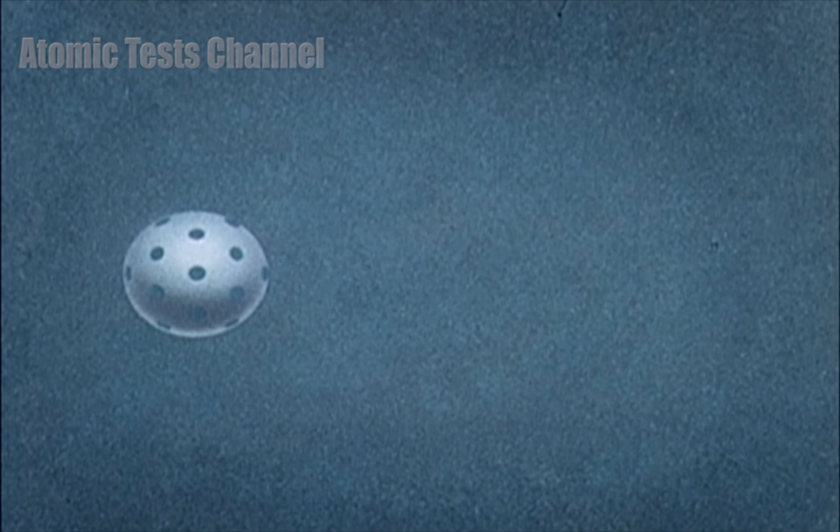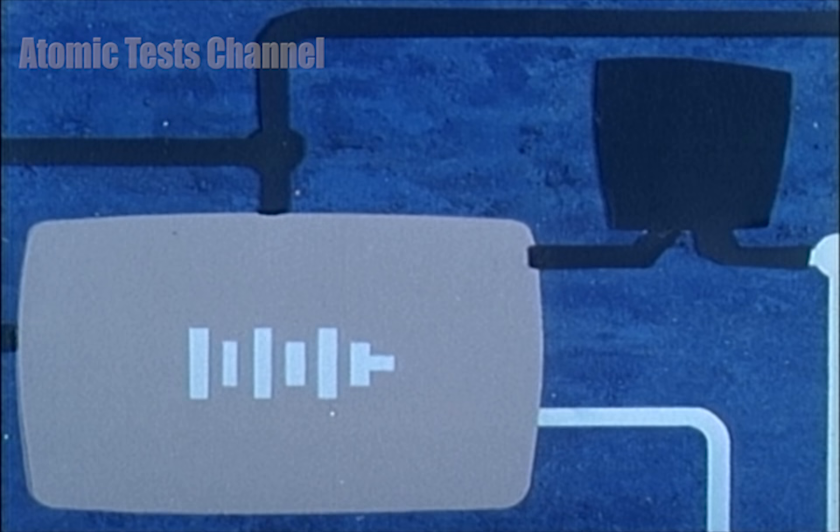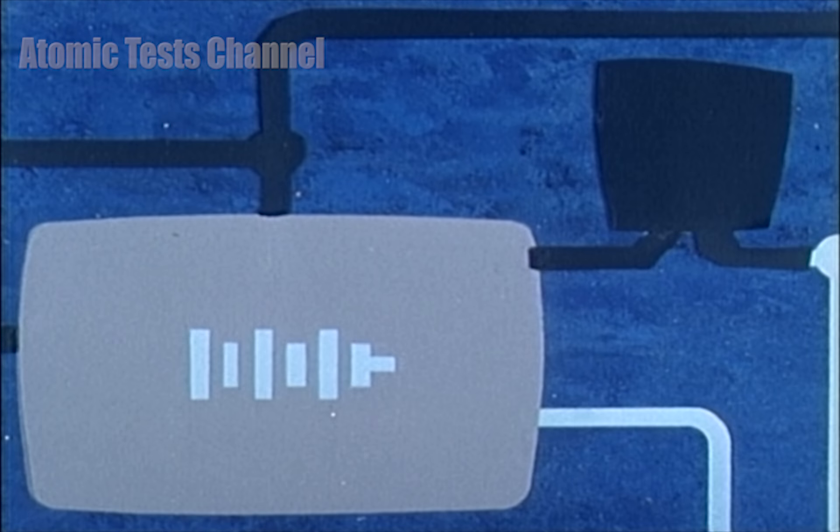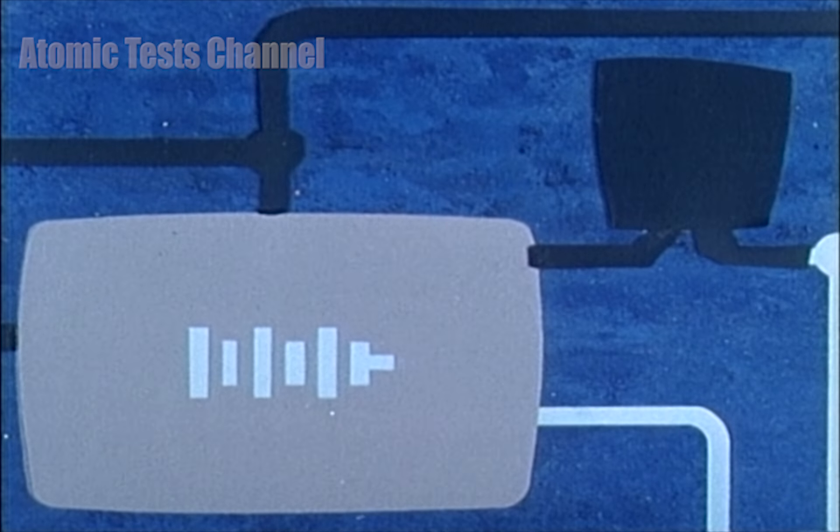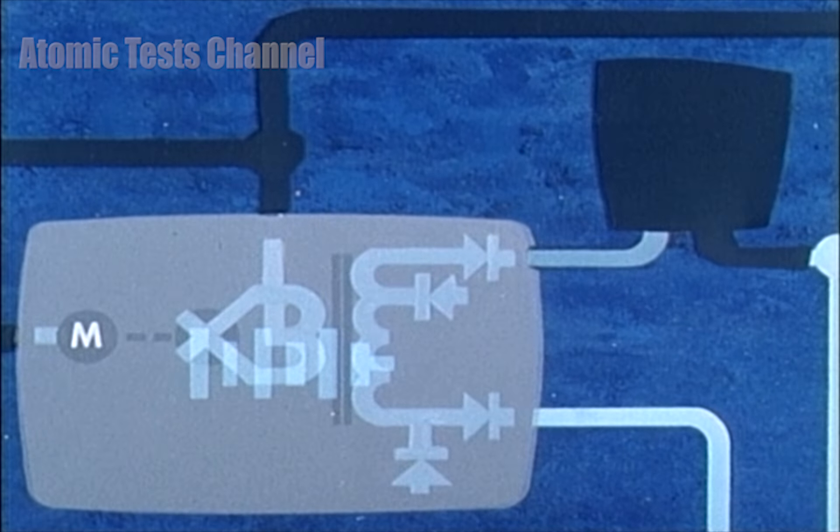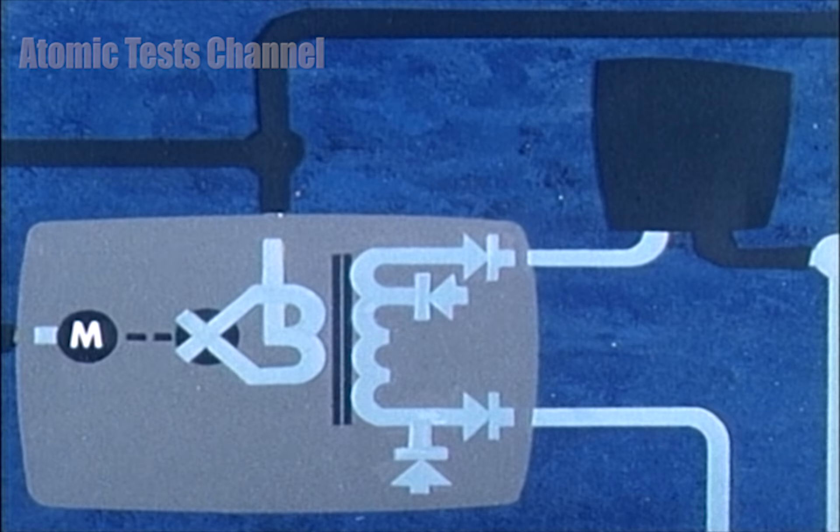A second type is a fast-acting explosive switch. The capacitor or capacitors, the number depending on the number of detonators, can be charged to the appropriate voltage by thermal batteries. Or an alternate method of charging the capacitor is with a rotary chopper converter system.